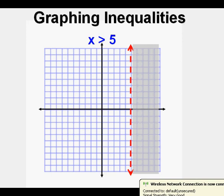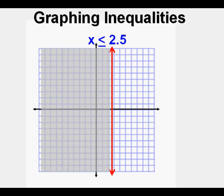Let's graph this inequality: x is less than or equal to 2.5. When getting ready to graph, it helps to say it differently — say 'x is equal to and less than 2.5.' Saying the equal to or not equal to first helps determine the type of line you draw. We draw a vertical line at x equals 2.5. Since it's less than or equal to, we make that a solid vertical boundary line, and since it's less than, we shade everything to the left of that solid boundary line.